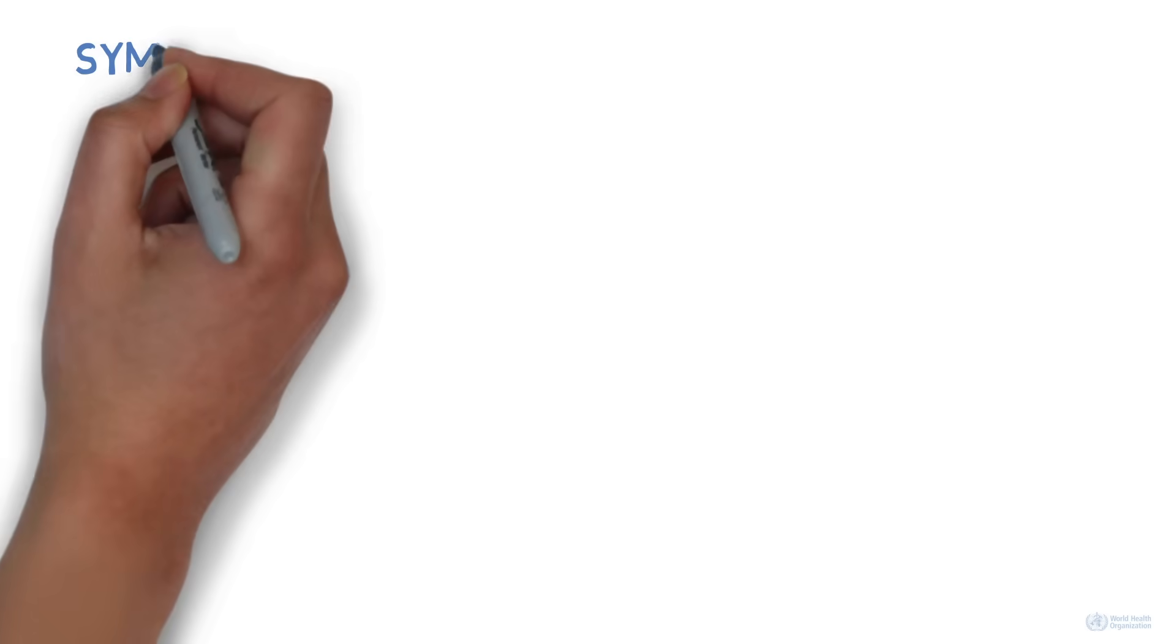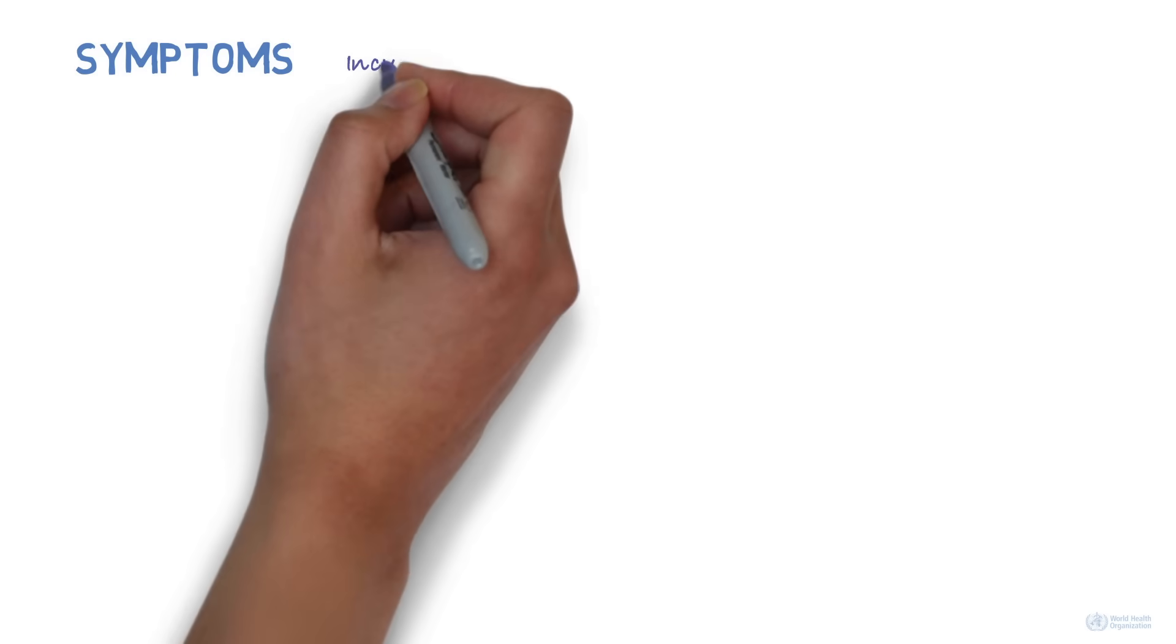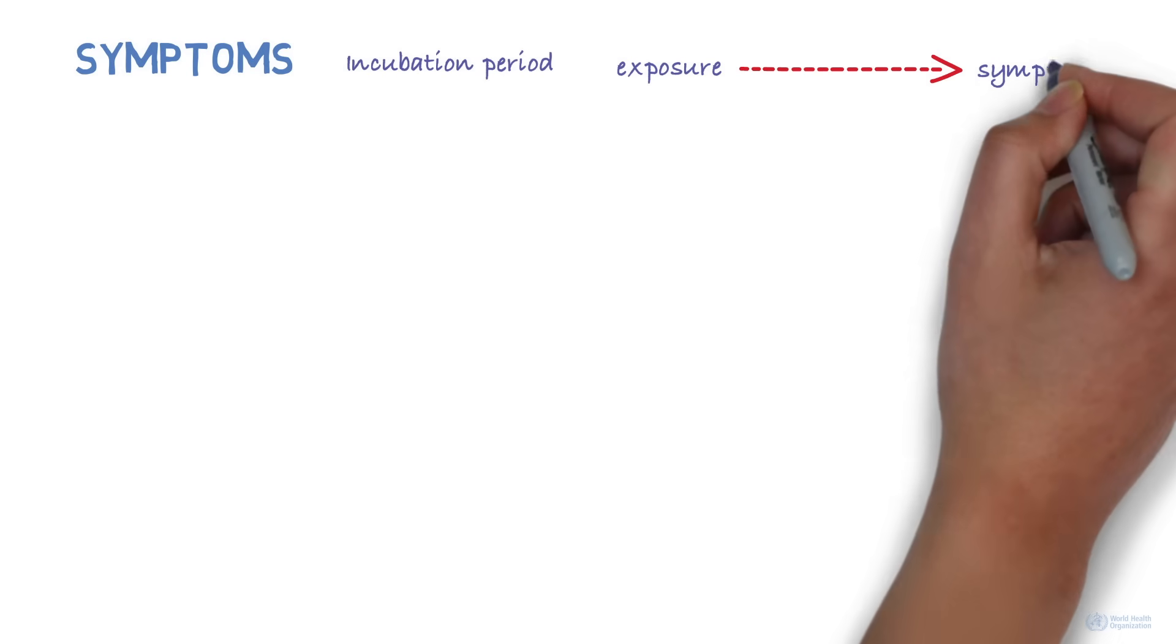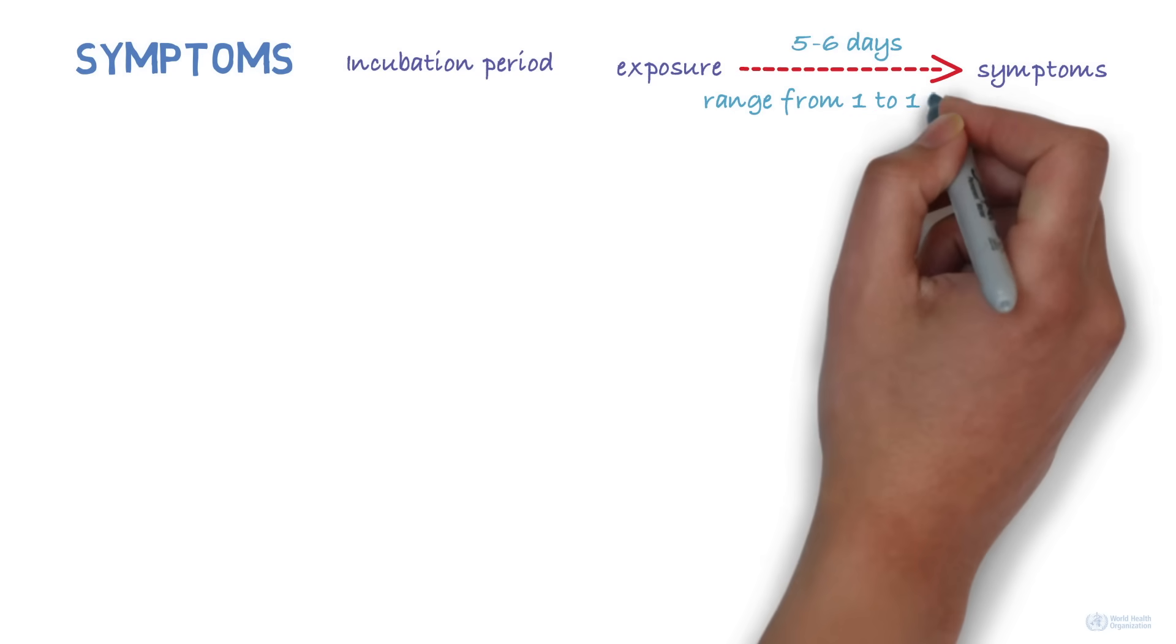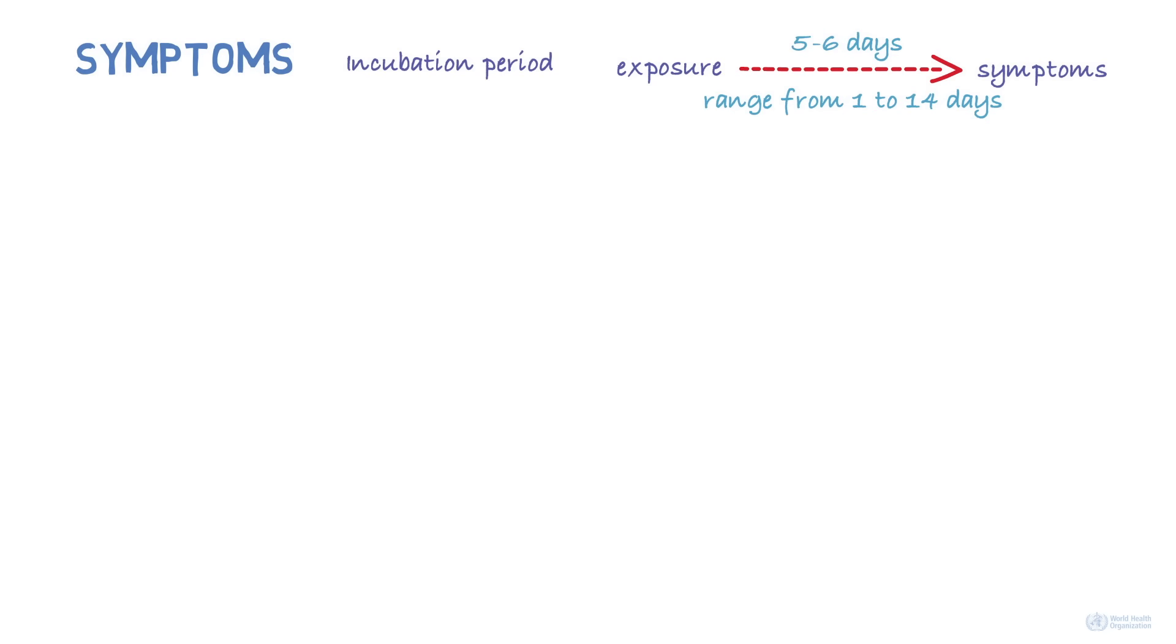What are the symptoms? The incubation period, which is the time taken from exposure to the virus and development of symptoms, is on average 5 to 6 days, but can range from 1 to 14 days. There can be a range of symptoms, from very mild to severe. Some people may not develop symptoms.